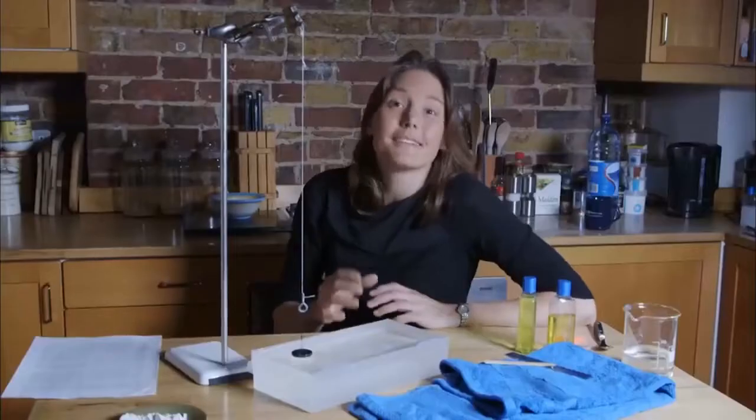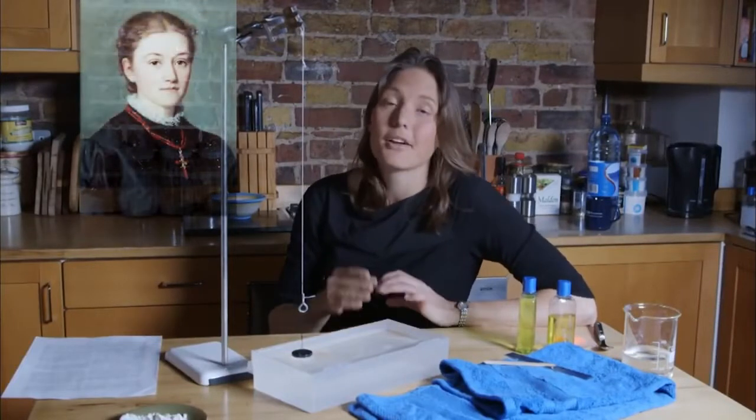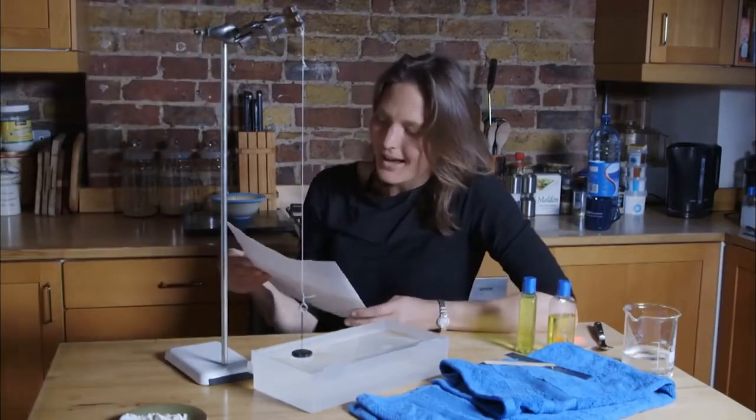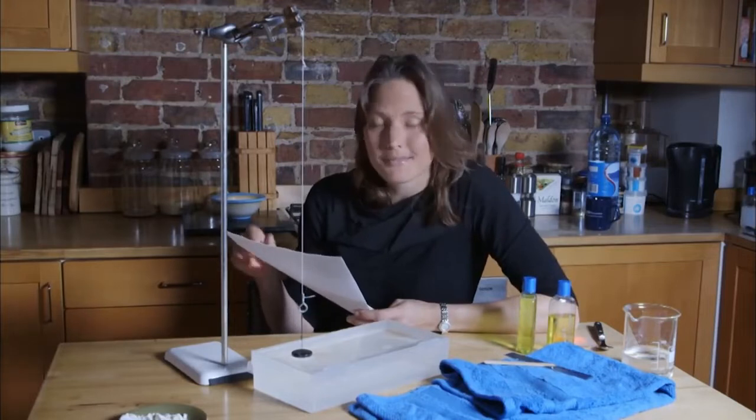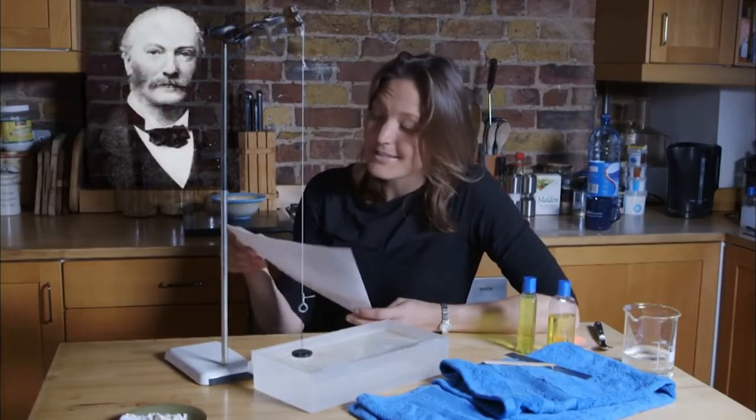This was a surprisingly difficult question to answer. And the key to solving it came not from the great men of Victorian science, but from an obscure house in Germany. Some of the earliest experiments on surface tension were done by a German lady called Agnes Pockels. And her work was only published in 1891. I've got a copy of the paper here. And the paper is prefaced by a note by Lord Rayleigh, who is a very famous English physicist. And this is what he said, and this is his note to nature.